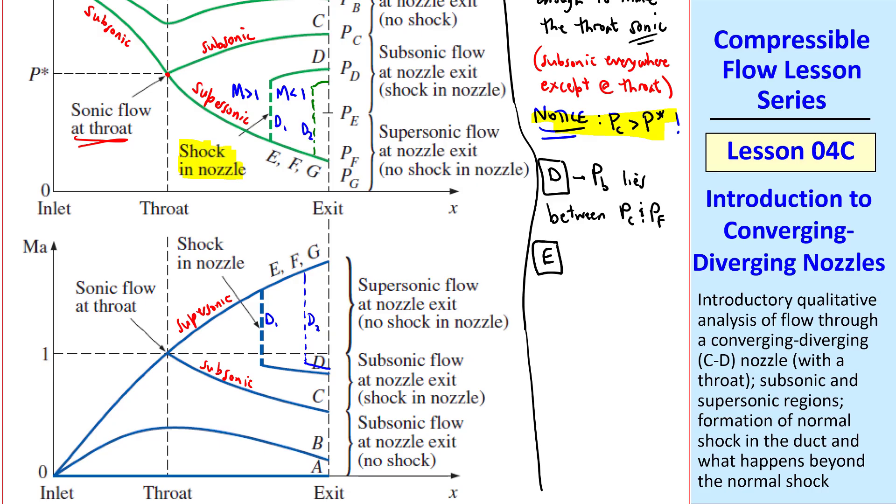There's another special case, E, where Pb is such that the shock lies exactly at the exit plane. We show that here, where it really should be up higher, because there's a strong shock there at the exit plane. And there's a shock in the Mach number diagram to point E as well.